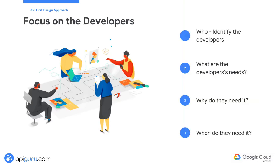Before initiating the development of a new API, it's crucial to identify the specific developers or teams who will be using it, understand their requirements and expectations, determine the purpose and problem the API is intended to solve, and establish the timeline or deadlines for when the API must be delivered. Answering these questions ensures that the API is tailored to meet the needs of its intended users and is delivered on time.